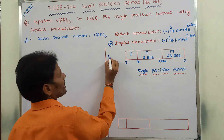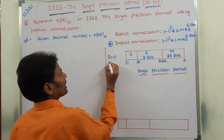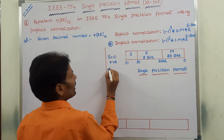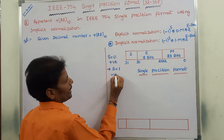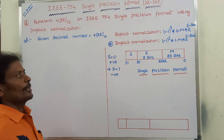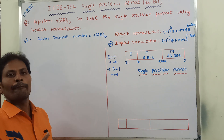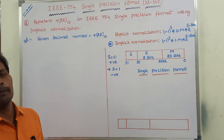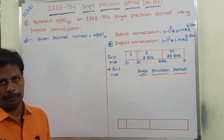If the sign bit S is equal to 0, it represents a positive floating point number. If the sign bit value S is equal to 1, it represents a negative floating point number. Based on the sign bit value, we can determine whether the floating point number is positive or negative.